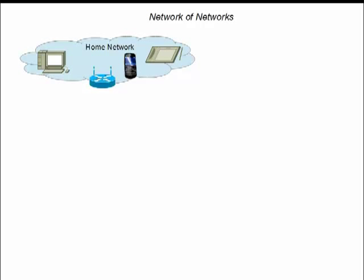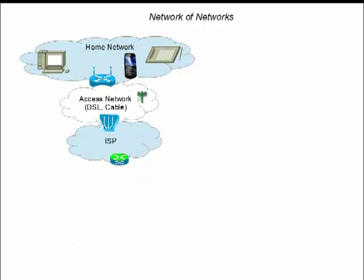We can all start by relating to our home network. Inside our home we quite possibly have a desktop computer, a tablet device, and a smartphone, and can also have home monitoring or a wide range of IP devices. That home network is usually connected via an access network for residential users.